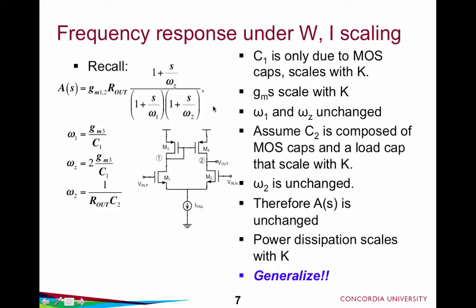So this is quite good: we've adjusted the current and the width and the frequency response is unchanged. Later we'll talk about why we would want to do that, because right now we haven't varied the performance. Of course, the downside is that power dissipation scales with K — being drawn from a fixed power supply, the current is now K times as big. We've shown this for this simple OTA circuit; let's see if we can generalize this to any circuit.